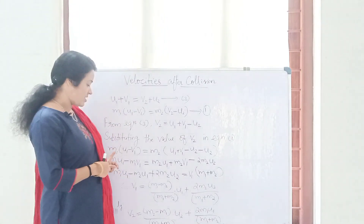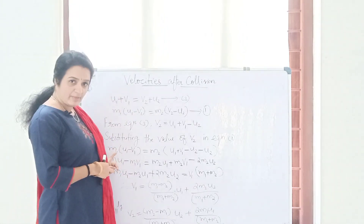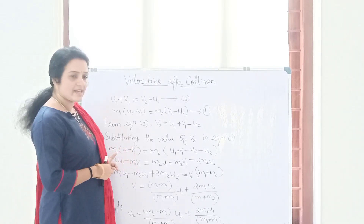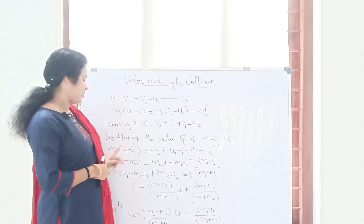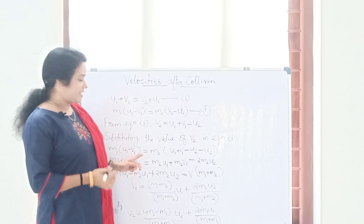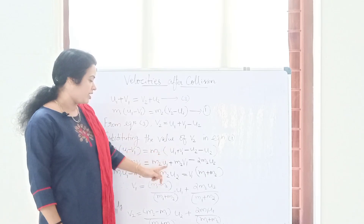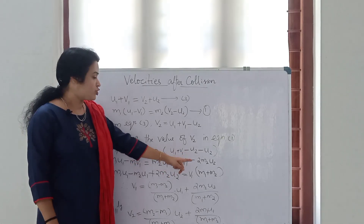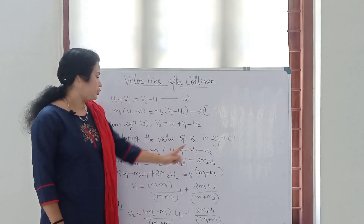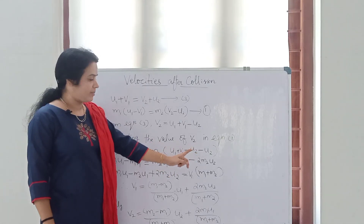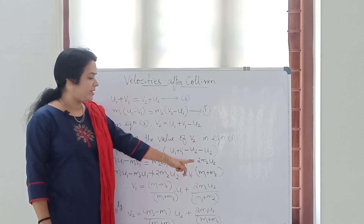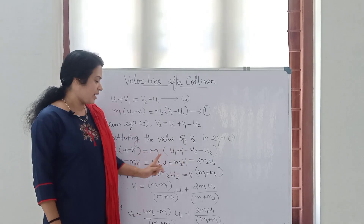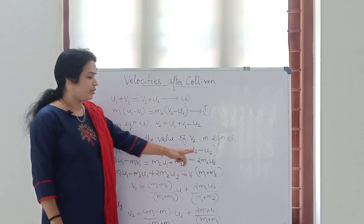Now we rearrange it — we multiply through the bracket. So what we get is: m1 u1 minus m1 v1 is equal to m2 u1 plus m2 v1 minus 2 m2 u2. Because there are two u2 terms — minus u2 minus u2 — that gives minus 2 m2 u2.